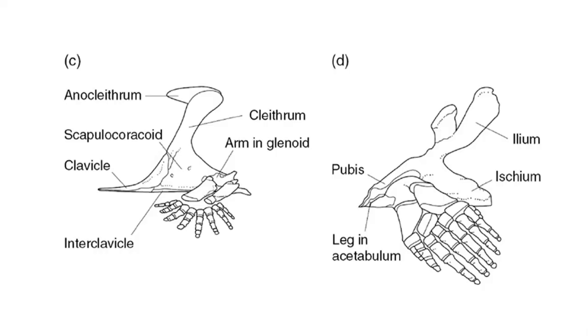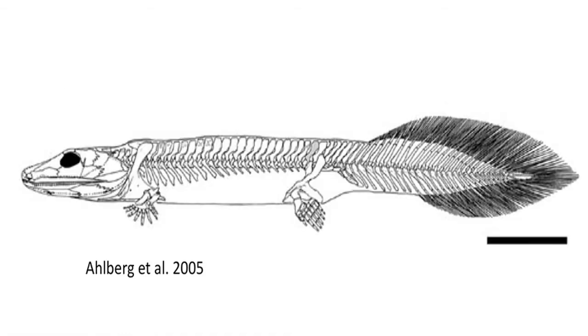In fact, many early tetrapods have more than five digits in the hands and feet. Before this discovery, people had assumed that five digits was the ancestral condition, but in reality the number of digits is variable across vertebrates, although more than five is rare in advanced tetrapods. In the back, the pelvis is composed of three bones: the ilium, ischium, and pubis, with an acetabulum joint with the femur. The ilium attaches to the vertebral column near a sacral region.